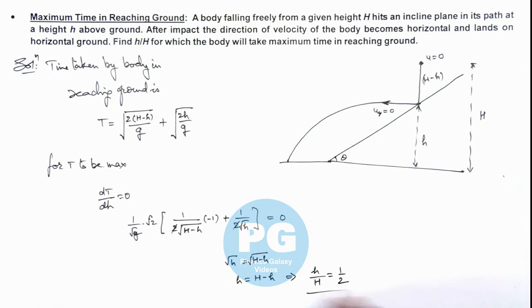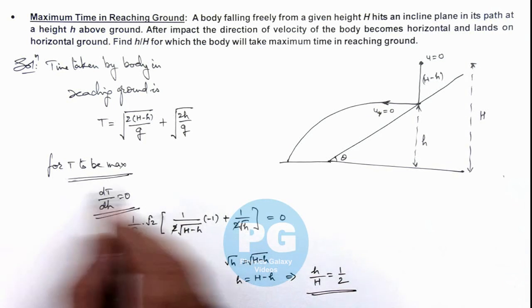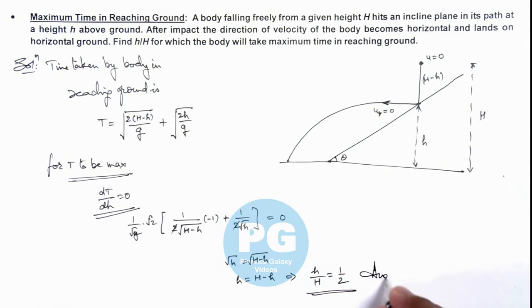This is the value of h by H for which dt by dh is zero. I am leaving it as an exercise for you to once again differentiate and verify that the second derivative at h by H equal to 1 by 2 is coming out to be negative, which will verify that at this value of h by H, t will be maximum. So this is the final result of our problem.